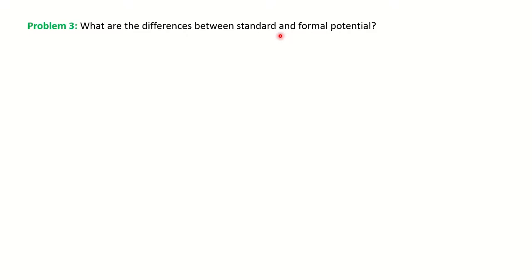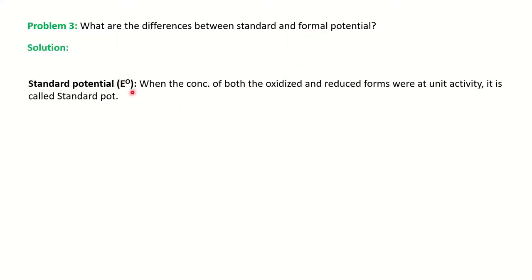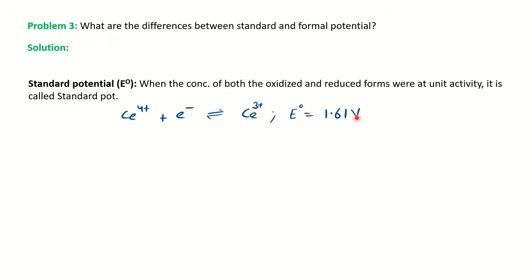The next question: what are the differences between standard and formal potential? Standard potential, represented by E⁰, is when the concentration of both the oxidized and reduced forms are at unit activity. For example, the reduction of Ce⁴⁺ to Ce³⁺ has a reduction potential of 1.61 V, and since the concentration of both species is at unit activity, this is the standard reduction potential.